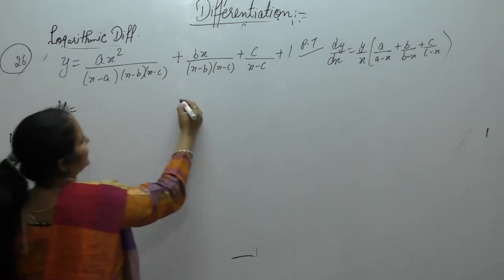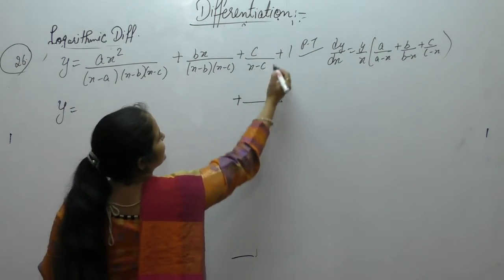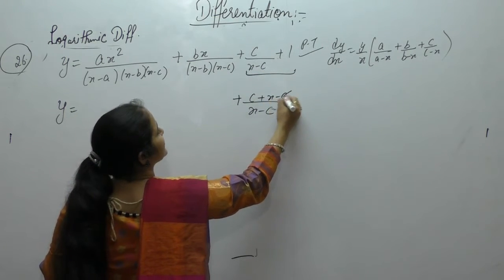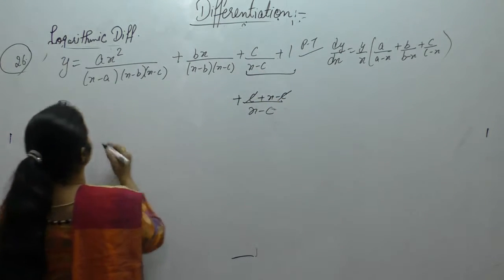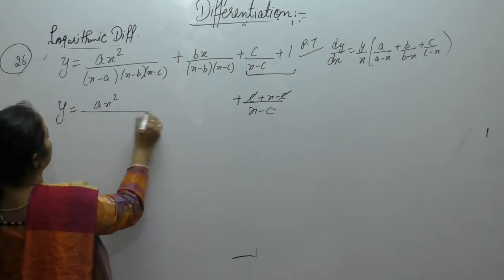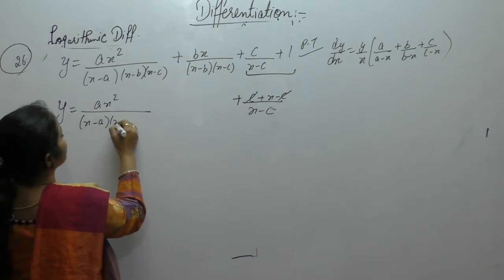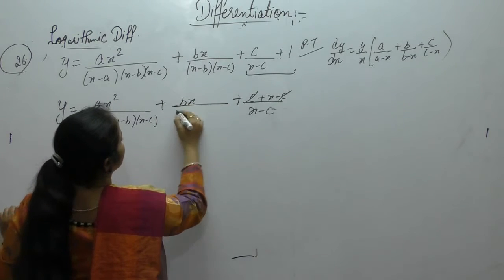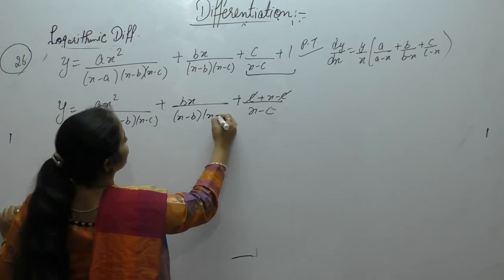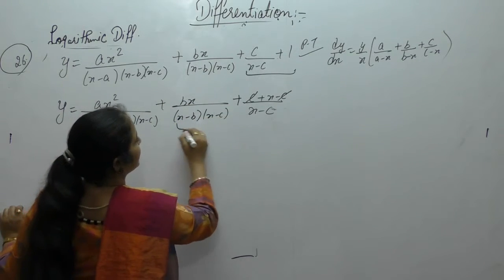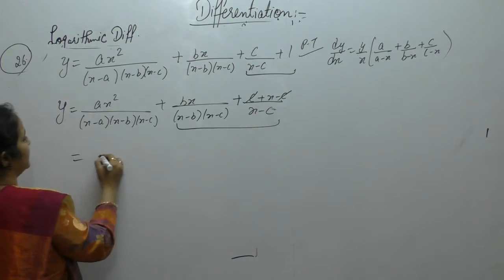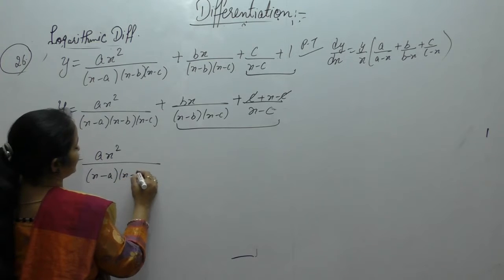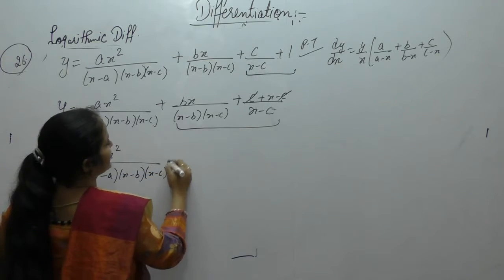Take the first term as it is, second as it is, then take the LCM. So we get c + x - c, giving us ax²/[(x-a)(x-b)(x-c)] + bx/[(x-b)(x-c)]. Now solve these two terms: ax²/[(x-a)(x-b)(x-c)].